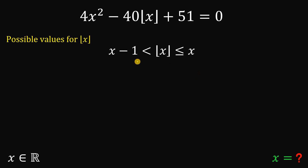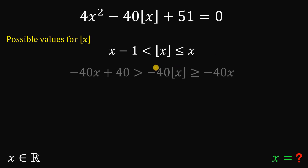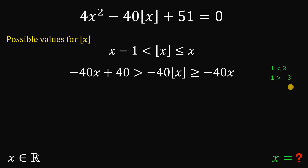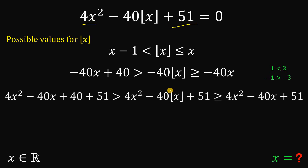Now, let's multiply this inequality by negative 40. When we do that, the inequality symbols flip — this is called the change of sense. For example, 1 is less than 3, but if we multiply by negative 1, negative 1 is now greater than negative 3. So the inequality changes, and that is called the change of sense. Now, what we're going to do is add 4x squared plus 51. Since 4x squared is a positive number and 51 is a positive number, the inequality doesn't change at all.